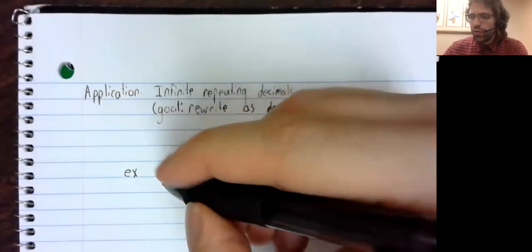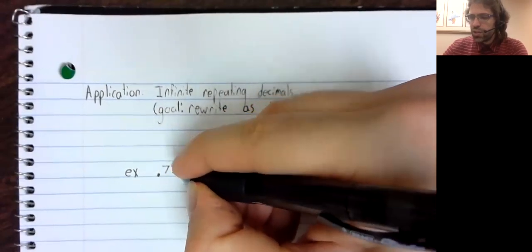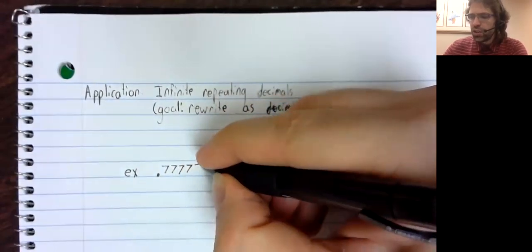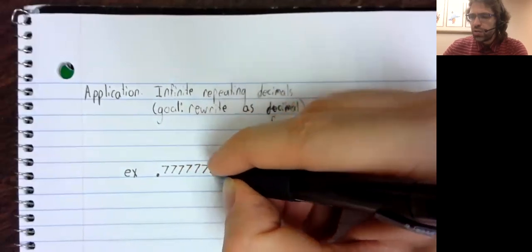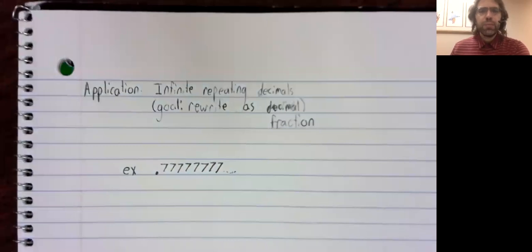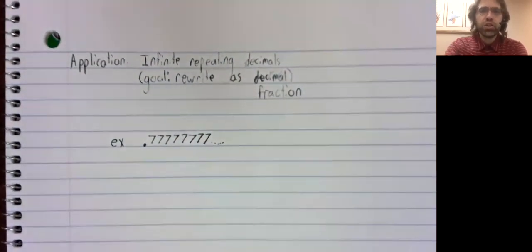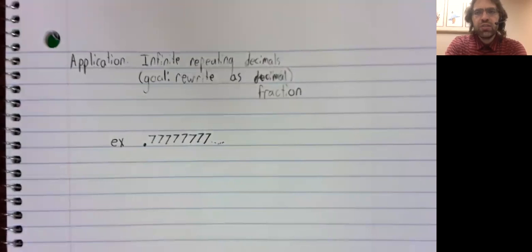So, for example, 0.7 repeating, and we want to convert that into a fraction. The key observation is that any decimal like this can be rewritten as an infinite series.